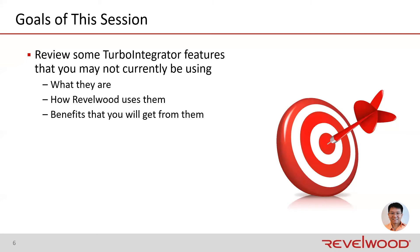From time to time, IBM will release new functionalities or new functions that may help perform a specific task, or new parameters to help old functions run more efficiently. With these releases, customers may not be aware that they're available. This is where Revelwood will come in and take this opportunity to educate not only the developers, but also the business users on how to optimize their system. Today we'll be going over a few of these features.